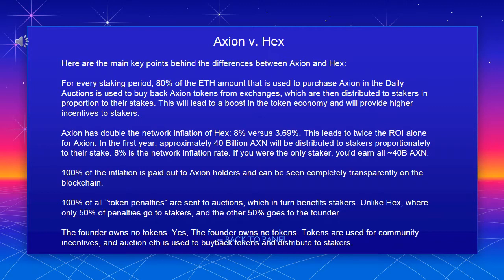Axion is designed to be a system where you can park your money and have it grow at an incredibly fast rate. Axion vs. HEX — here are the main key differences: for every staking period, 80% of the ETH used to purchase Axion in the daily auctions is used to buy back Axion tokens from exchanges, which are then distributed to stakers in proportion to their stakes, boosting the token economy.